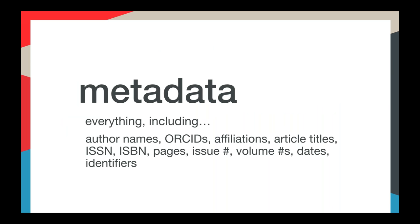When you register your content you must send us basic citation metadata for every item you register. This includes titles, authors, publication dates, issue numbers, ISSNs, ISBNs — anything that describes the content you're registering and that you will use in a citation. We have minimal requirements because we need to support a large range of publication practices, but we ask that you send us as much metadata as possible and that it be accurate and clean. The more robust your metadata is, the more likely your DOIs will be discovered and disseminated.